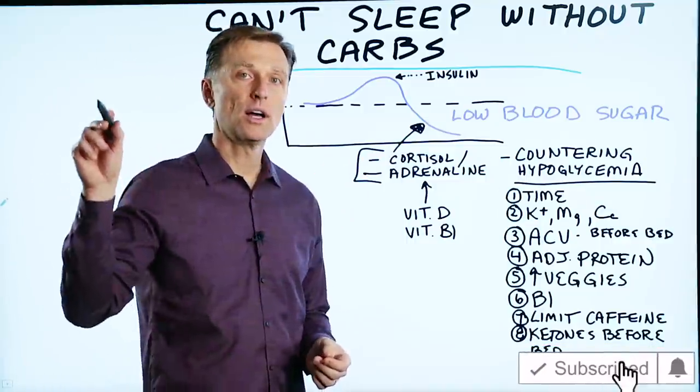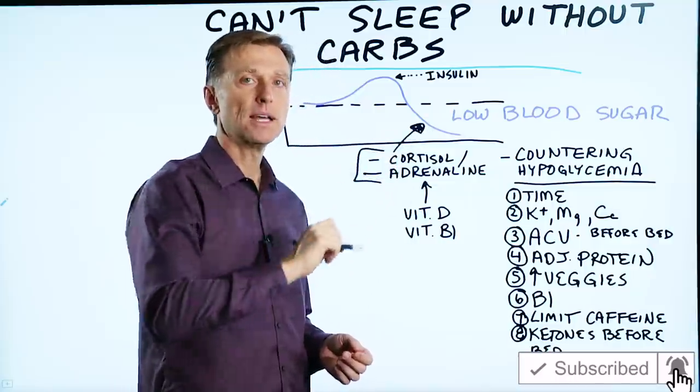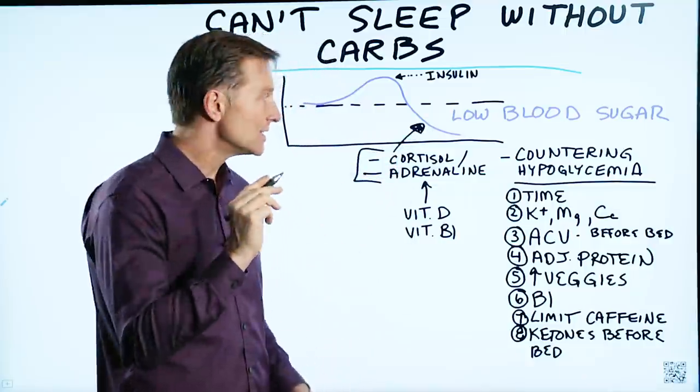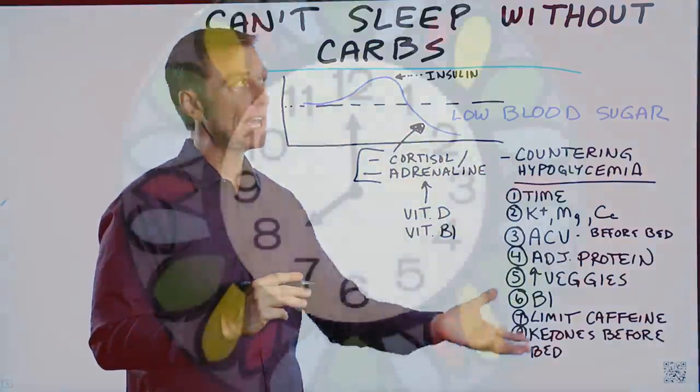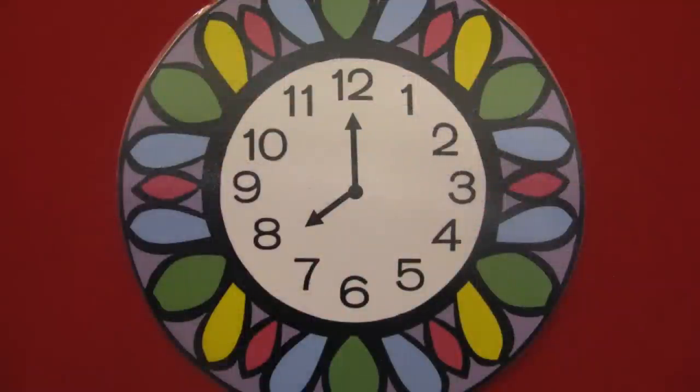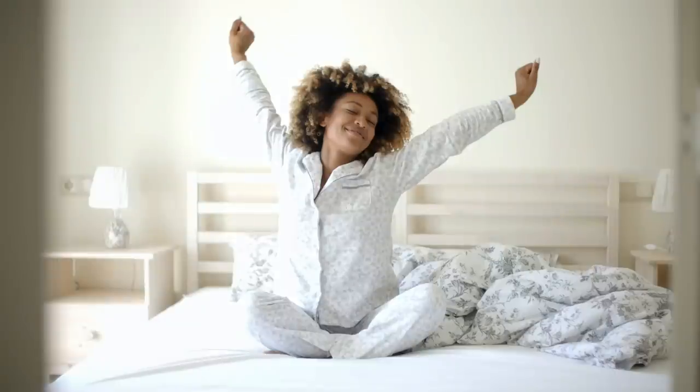If you look at the cortisol circadian rhythm, it's the lowest at 2 a.m. in the morning. It's the highest at 8 o'clock in the morning when you're supposed to wake up. Just realize that adrenaline is the hormone that will wake you up. So that's usually behind the situation. But what can you do about it?